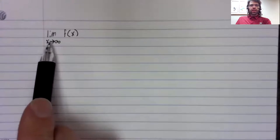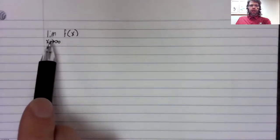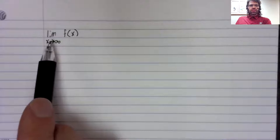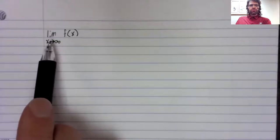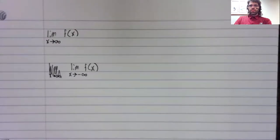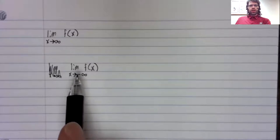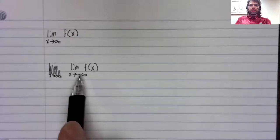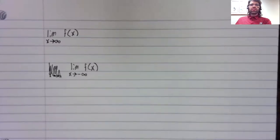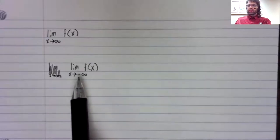Here, x is getting arbitrarily large. That's represented by saying that x is approaching infinity. Here, x is getting arbitrarily small, by which we mean not close to zero. X is going to negative infinity. So its magnitude is getting large, but it's going in the negative direction.